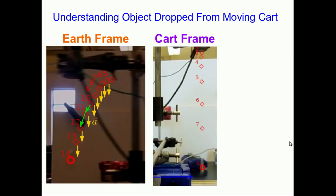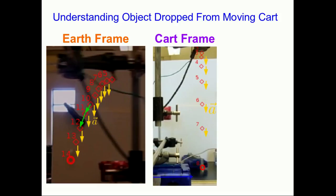Let's understand this result in terms of things we've seen earlier in the course. Remember that in the cart frame, an observer sees this object move straight down, speeding up — so for them, the acceleration points straight down. But all inertial observers always agree on measurements of accelerations, and so the person in the earth frame has to get the same result: the acceleration is straight down.